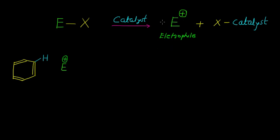This electrophile is nothing but something that is loving towards electrons, or a friend of electrons. It means that this electrophile will attack on the electrons, and simultaneously the formation of the X catalyst takes place.